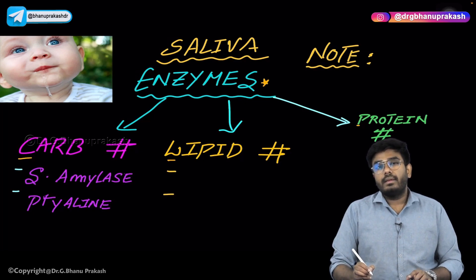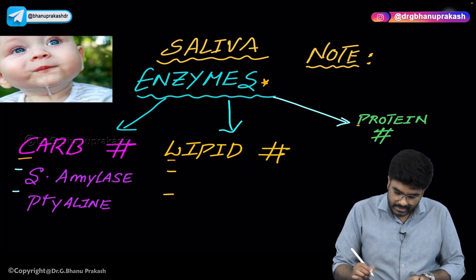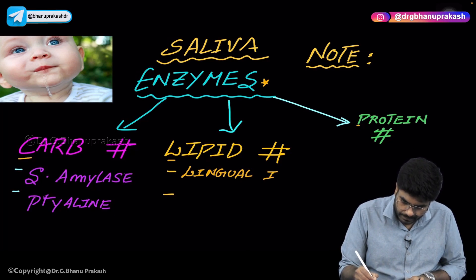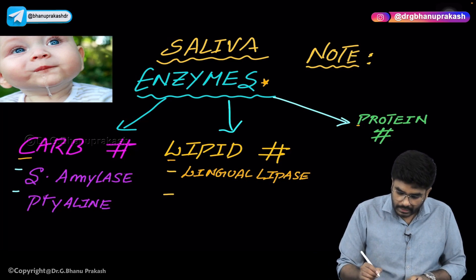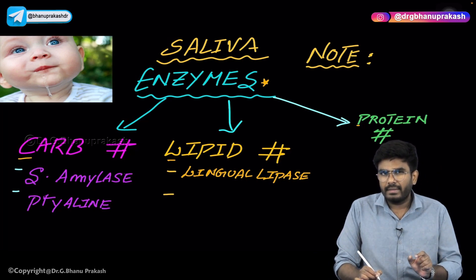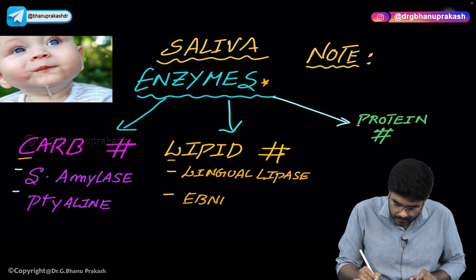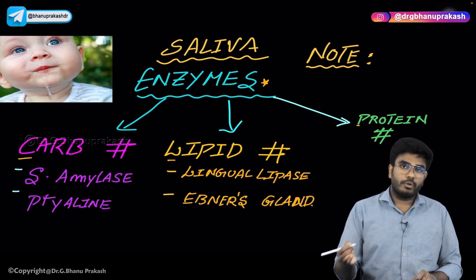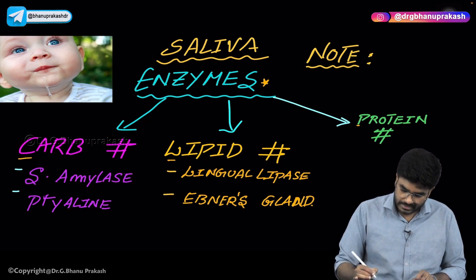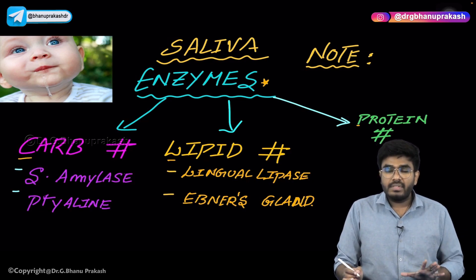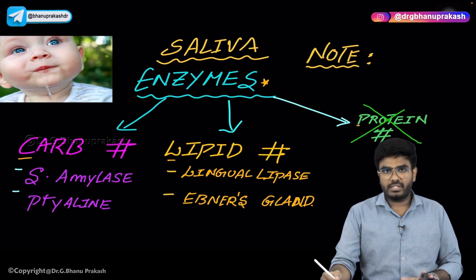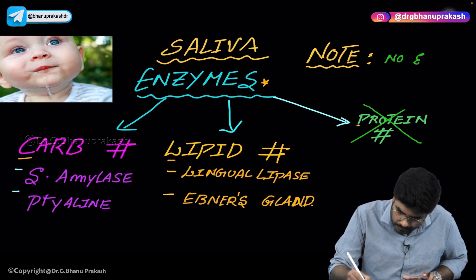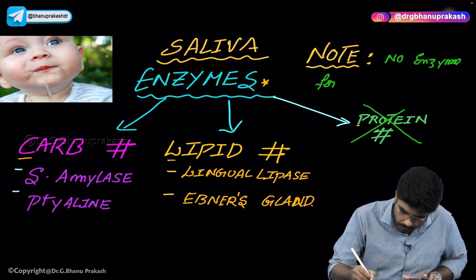Is there an enzyme in saliva that can digest lipids? Yes — the name of the enzyme is lingual lipase. Lingual lipase comes from the minor salivary gland, which is Ebner's gland. So Ebner's gland is the one that produces lingual lipase, which helps in digestion of lipids. As for proteins — there is no enzyme in saliva for protein digestion. Saliva does not have any enzyme for digesting proteins.